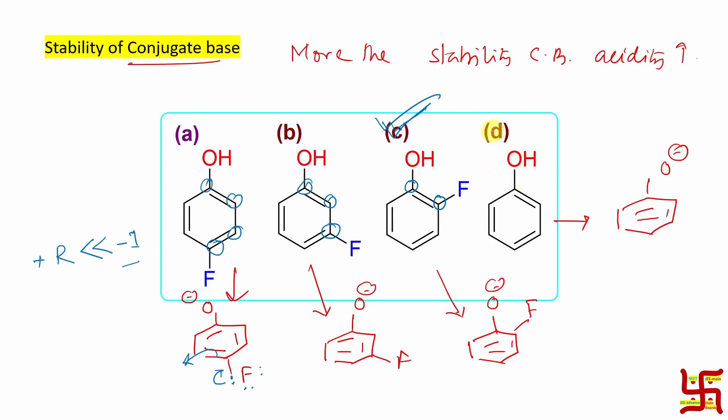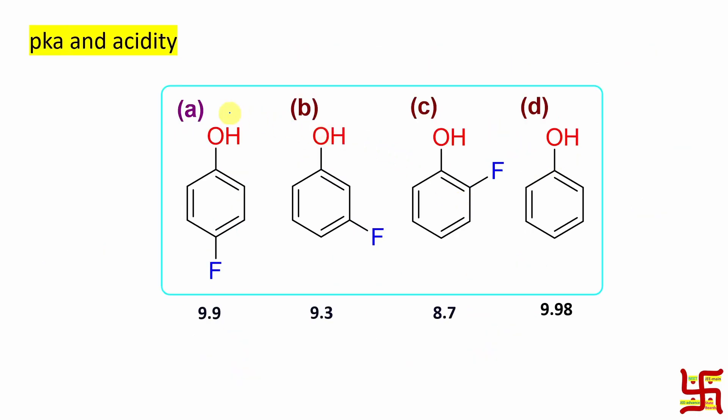Who is minimum acidic? Obviously, phenol itself. Now, the experimental proof of this concept is presented here by the pKa value. Remember one statement, lesser the pKa, higher the acidity. Now, whose case pKa is least? Obviously, 2-fluorophenol or ortho-fluorophenol pKa 8.7 and who has pKa maximum? Obviously, phenol itself, 9.9.